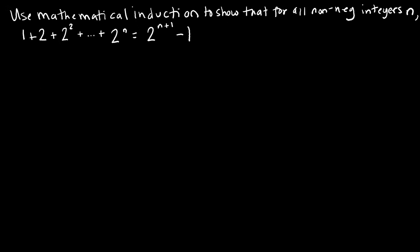Let's do another proof using induction. In this case, we want to show that for all non-negative integers n, 1 plus 2 plus 2 squared all the way up through 2 to the n is equal to 2 to the n plus 1 minus 1. One thing I want to point out is that we're dealing with all non-negative integers — they didn't say positive integers, which means we're starting at 0, 1, 2, 3, etc. So n is greater than or equal to 0.